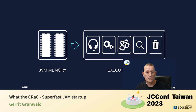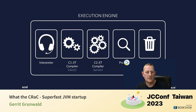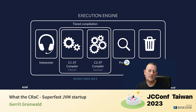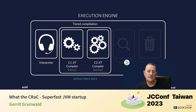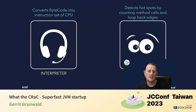From the JVM memory, it gets into the so-called execution engine, which is part of the JVM. The execution engine has multiple parts: it starts with the interpreter, then we have the C1 JIT compiler (formerly known as the client compiler), and then the C2 compiler (formerly the server compiler). There's also a profiler and garbage collectors. Since JDK 8, both compilers are part of the execution engine and are used in tiered compilation.